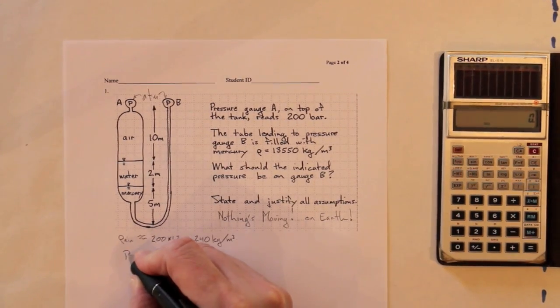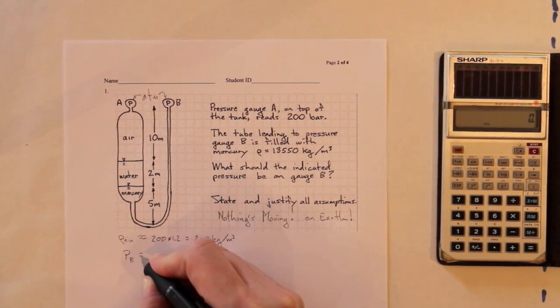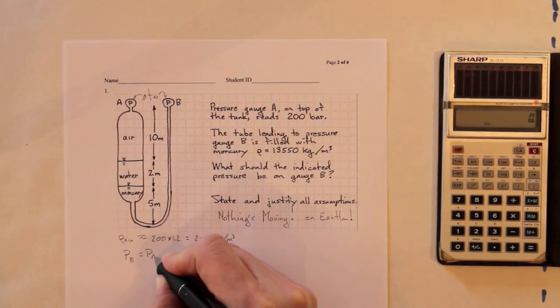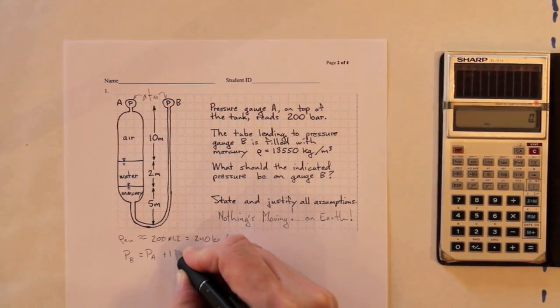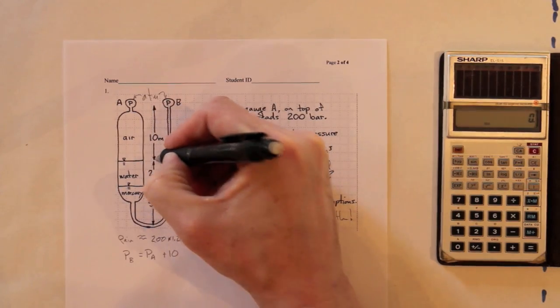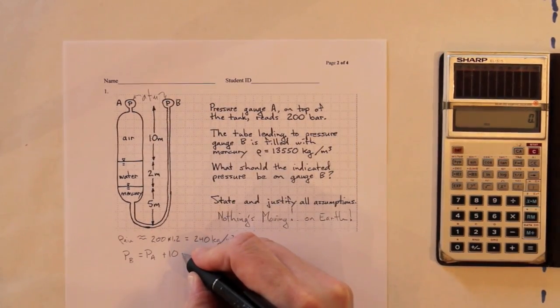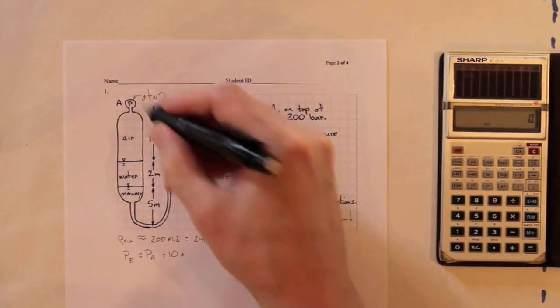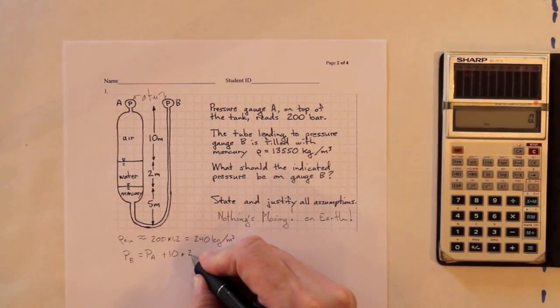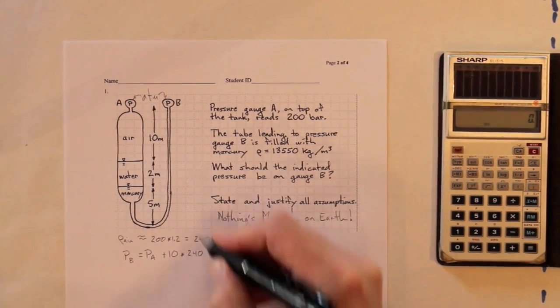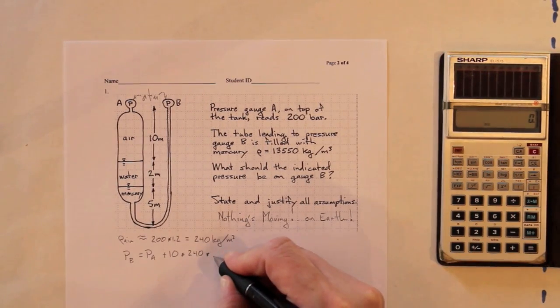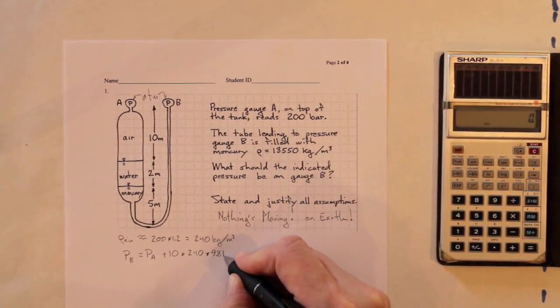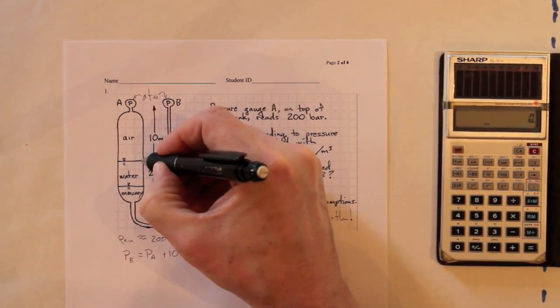So, the pressure at B will be equal to the pressure at A plus 10 meters times density of air, 240 kilograms per cubic meter, because the air is at such a high pressure, times G. That gets us down to here.